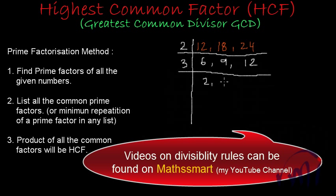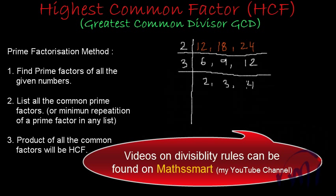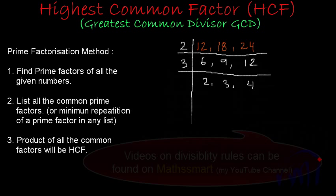Dividing: 6 ÷ 3 = 2, 9 ÷ 3 = 3, and 12 ÷ 3 = 4. Now we have 2, 3, and 4. 2 and 4 are even numbers, they will be divisible by 2. But 3 will not be divisible by 2. And 3 is divisible by 3, but 2 and 4 are not divisible by 3. So our process actually ends here.